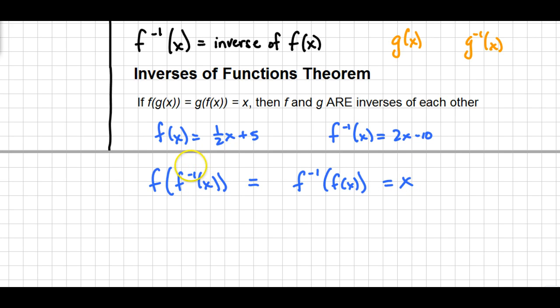So in this first one, I'm plugging the inverse into f. So I focus on what f looks like. F looks like 1 half times something plus 5. In that empty space where the variable used to be, I'm going to plug the inverse function, which is 2x minus 10. Now when I get rid of the parentheses here by doing multiplication, or the distributive property, 1 half times 2x is simply going to be 2 over 2x, which is just x. 1 half times negative 10 is negative 5. Now that I've done the distributive property, the parentheses drop, and then I still have this plus 5 to deal with. X minus 5 plus 5 is simply x. So far so good on that one.